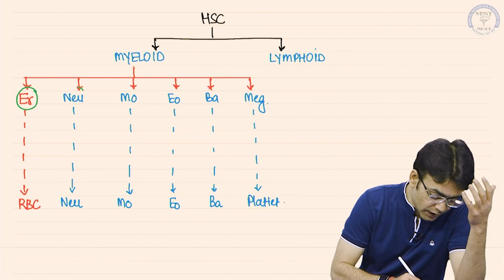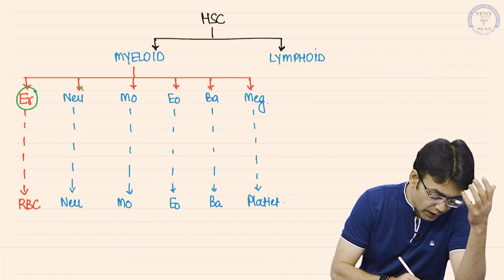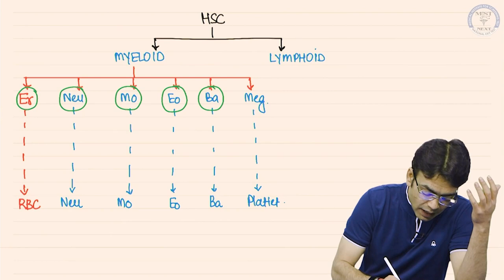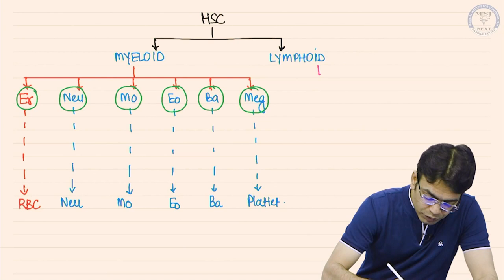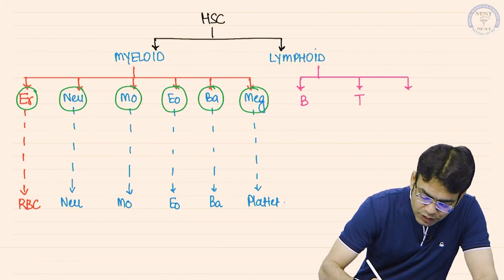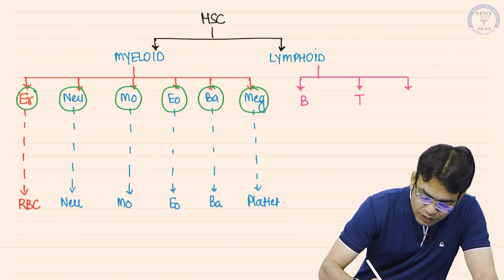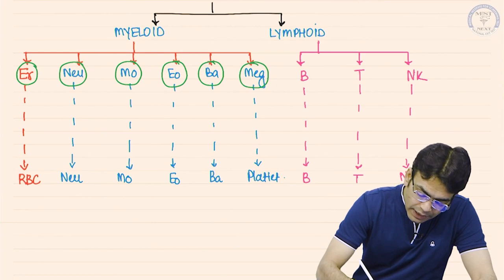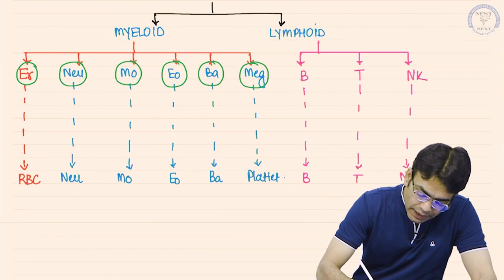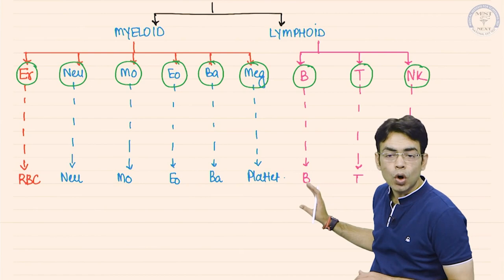The lymphoid progenitor converts into three types of lymphocytes: B lymphocyte, T lymphocyte, and NK lymphocyte. Immature cells are encircled to distinguish them from mature cells. The progression from top to bottom represents maturation — the most immature cells at the top and the most mature cells at the bottom.